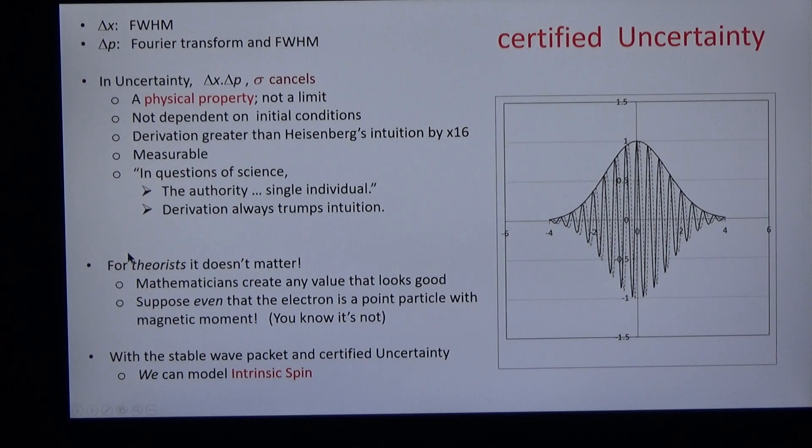For mathematicians, it doesn't matter. Mathematicians can create any value that looks good. They can suppose even that the electron is a point particle with a magnetic moment. But with a stable wave packet and certified uncertainty, we can model intrinsic spin.